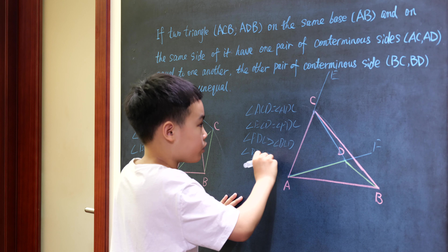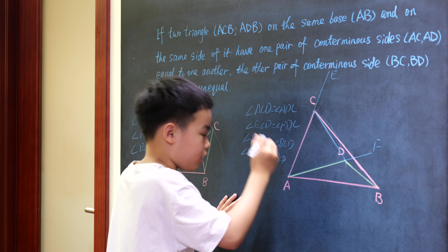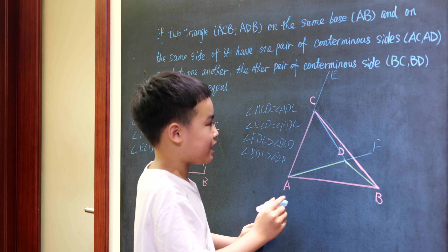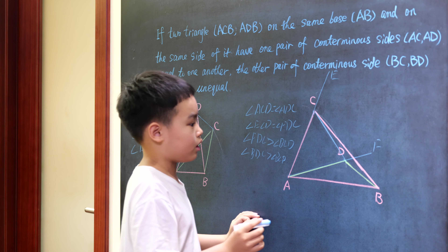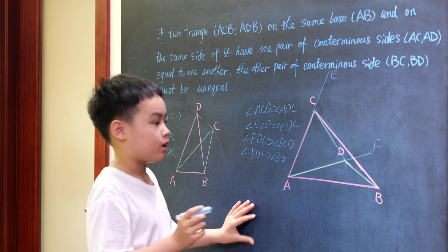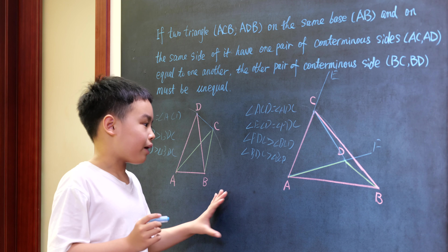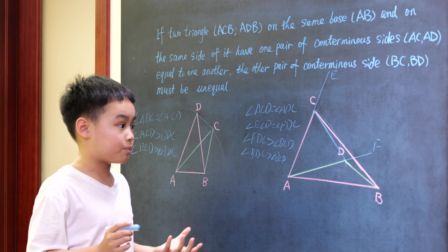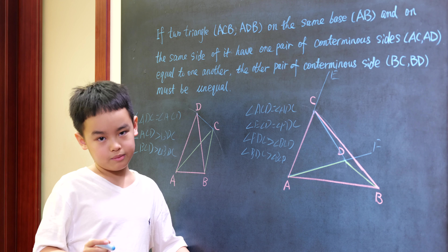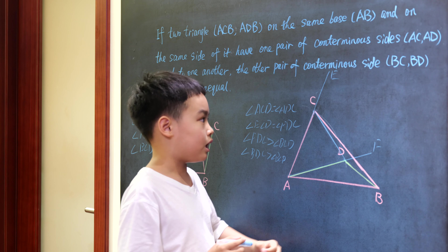Much more is angle BDC would be greater than angle BCD. But we have proved that angle BDC was greater than angle BCD, which is absurd. So in this case again, BD is equal to BC is impossible.